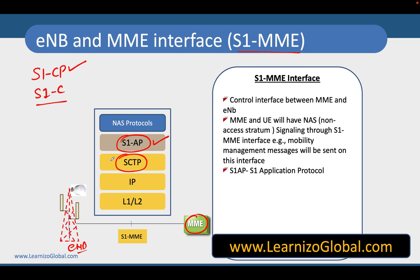SCTP is an enhanced version of TCP protocol. It typically supports multi-homing features and was first introduced in sigtran environments. S1AP is the protocol used between eNodeB and MME to communicate with each other.